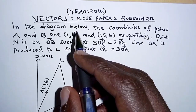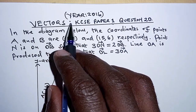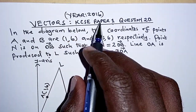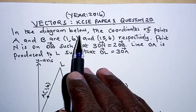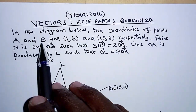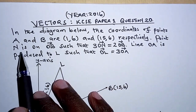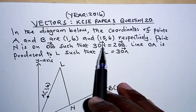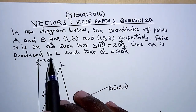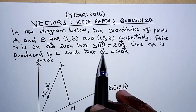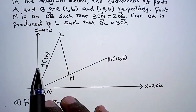Welcome to today's presentation. In this video we are going to look at KCAC the year 2016 paper 1 question 20. The question is on vectors. In the diagram below, the coordinates of points A and B are (1,6) and (15,6) respectively. Point N is on OB such that 3ON equals 2OB. Line OA is produced to L such that OL equals 3OA. The diagram as described is here.